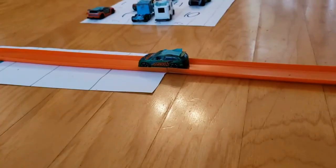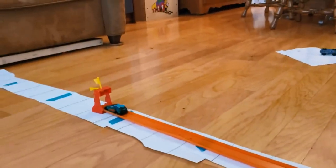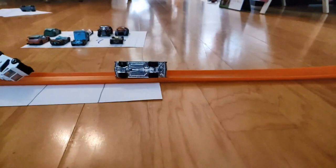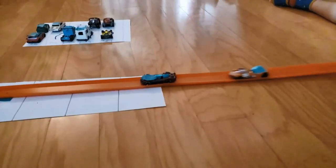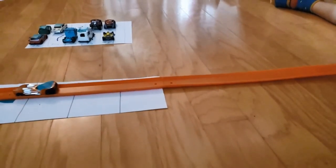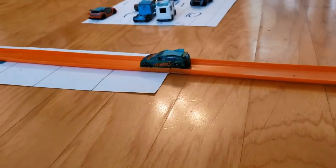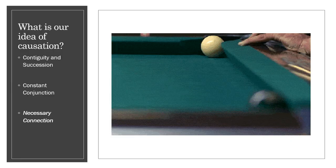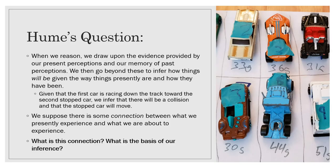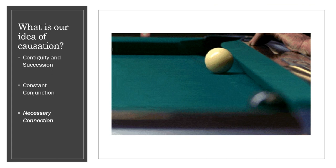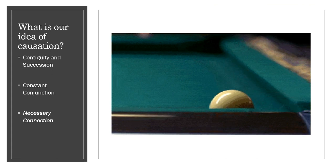Let's start with a little example. These are some videos that Sam created this morning. We have here a few collisions — some examples of causation. One car strikes the next and the next moves off in the opposite direction. Basic physical causation. What is our idea of causation exactly? What exactly do we mean when we talk about a cause? What exactly is our idea of cause and effect?